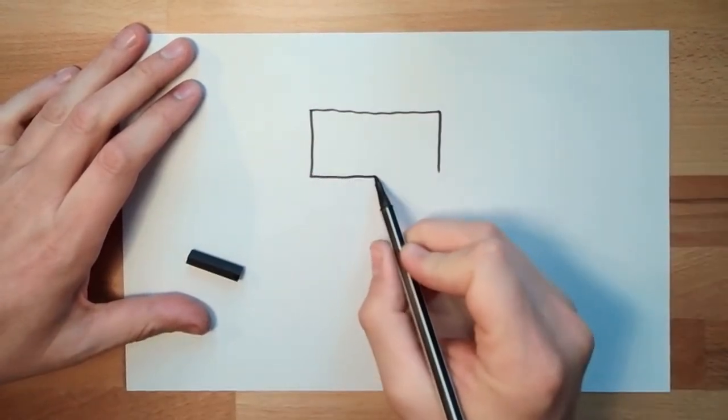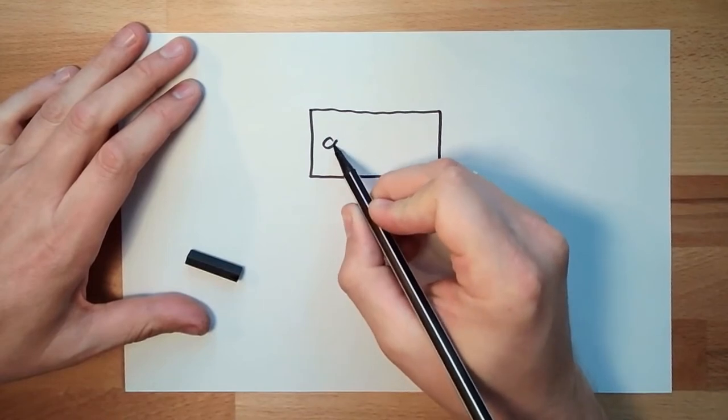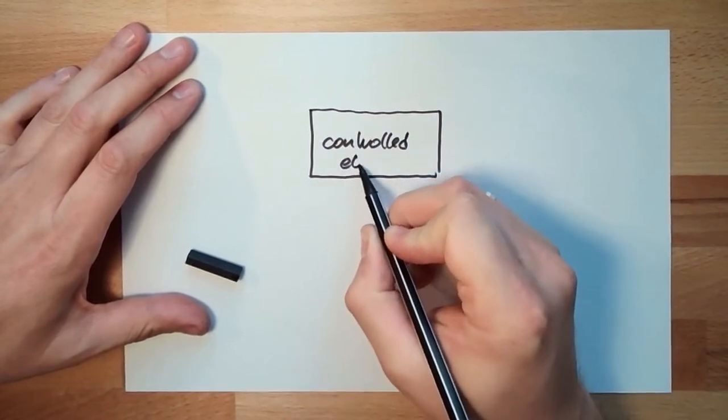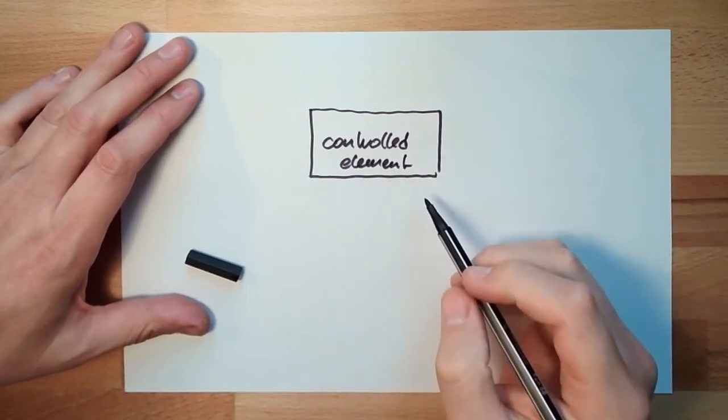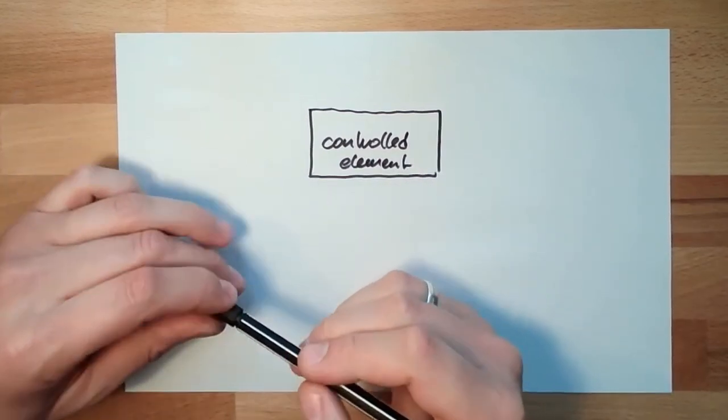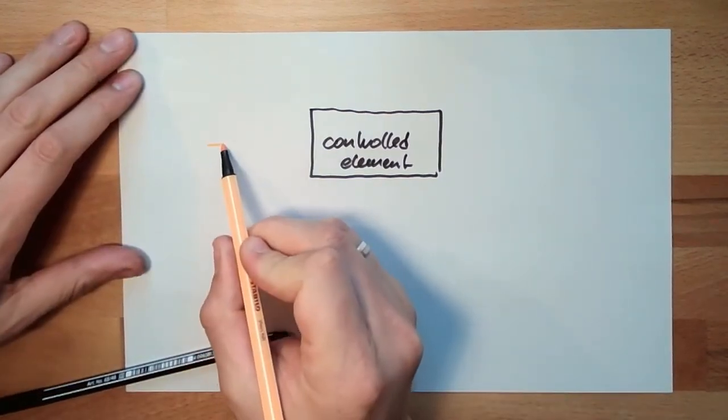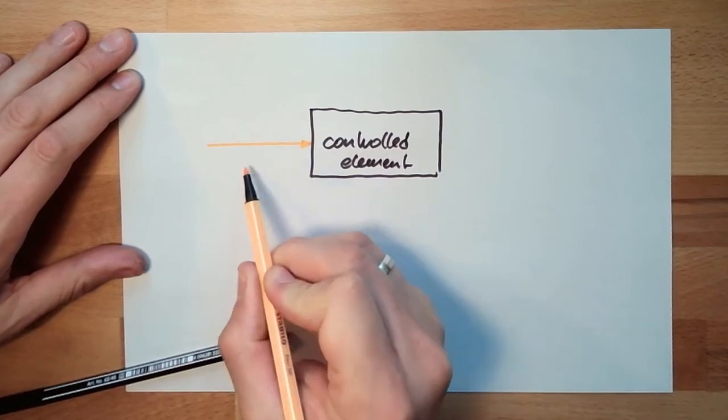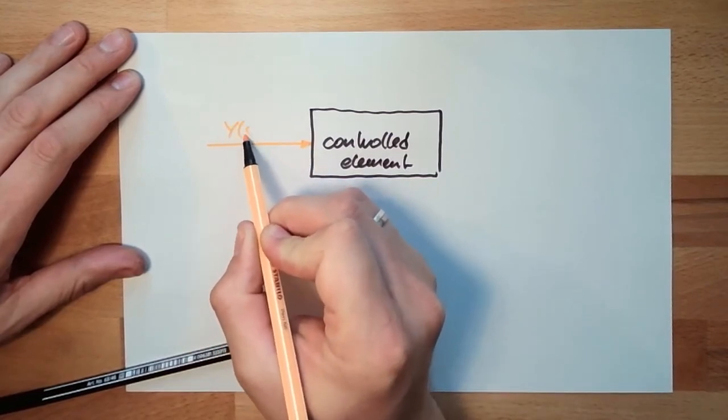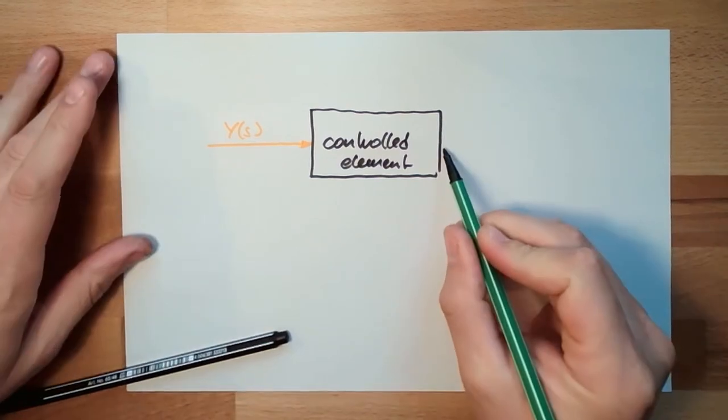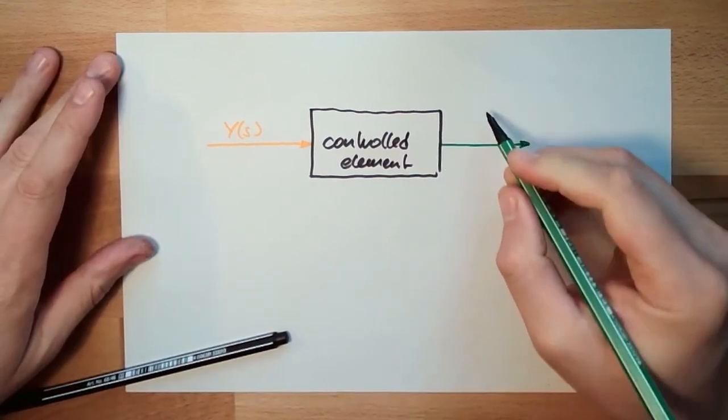There is some control element, it has some input, for us this is correcting variable Y, and it has some output, for us it's the controlled variable X.